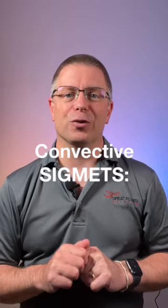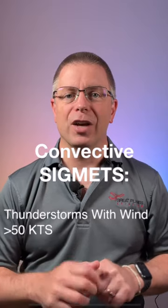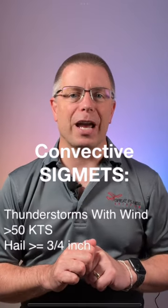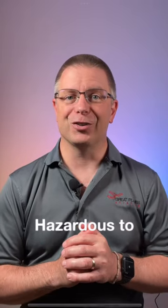Convective SIGMETs are issued for severe thunderstorms with surface winds greater than 50 knots, hail at the surface of ¾ inch diameter or more, or tornadoes. These are all related to thunderstorms and are significant because they're hazardous to everyone.